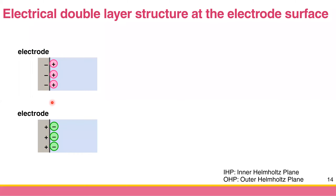In contrast, if you apply the positive potential, then you have the positive charge here, and then you need the anion or negative ion to balance the charge. You can see that this is one layer and this is another layer — that's why this is called the electrical double layer.